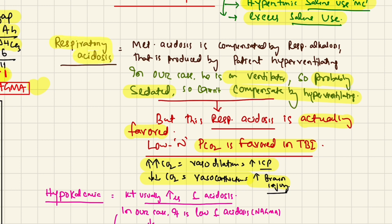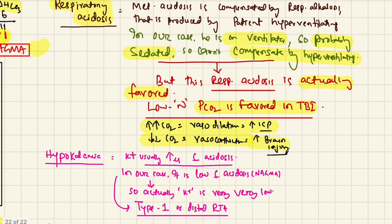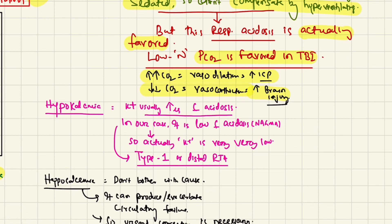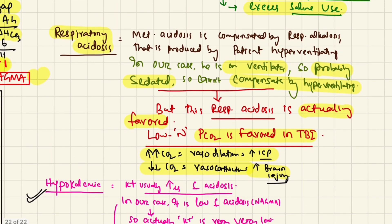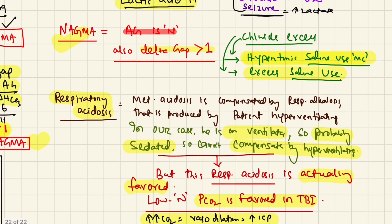So the respiratory acidosis may be intentional in this case. Now, why is there hypokalemia? Usually in acidosis, potassium rises because potassium exchanges with H+ ions — acidosis is always associated with high potassium. But in our case, even with severe acidosis at pH 7.1, potassium is only 3.2, which is very low. This can happen in Type 1 or distal renal tubular acidosis (RTA), where hypokalemia occurs alongside acidosis. This is likely another cause of the NAGMA.